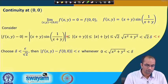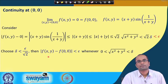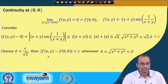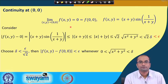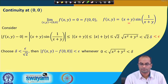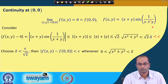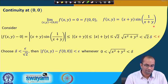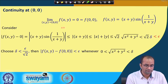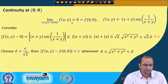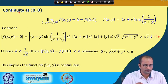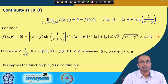Choosing δ = ε/√2, we ensure |f(x, y) − 0| < ε whenever (x, y) is in the δ-neighborhood of (0, 0). This is the epsilon-delta proof that the limit is 0, which equals the function value at (0, 0), and therefore f is continuous at (0, 0).